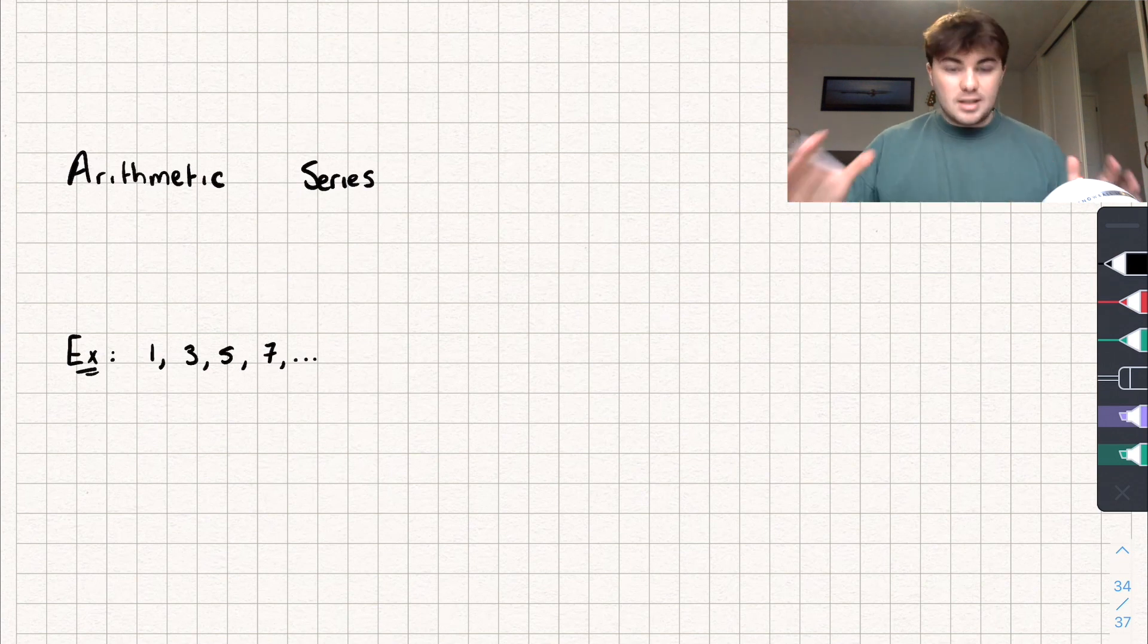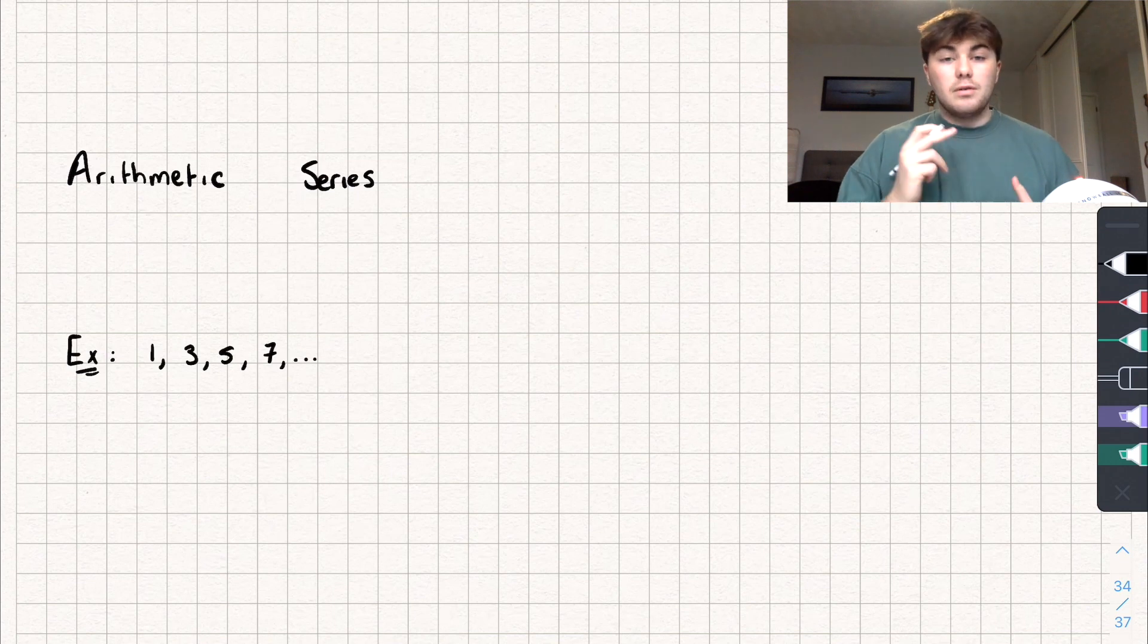So say we have the arithmetic sequence, or arithmetic progression, one, three, five, seven. So it's increasing by two each time, that's our common difference.